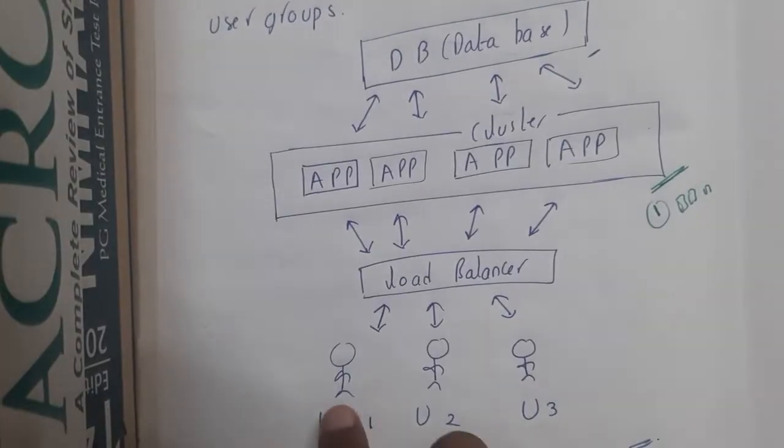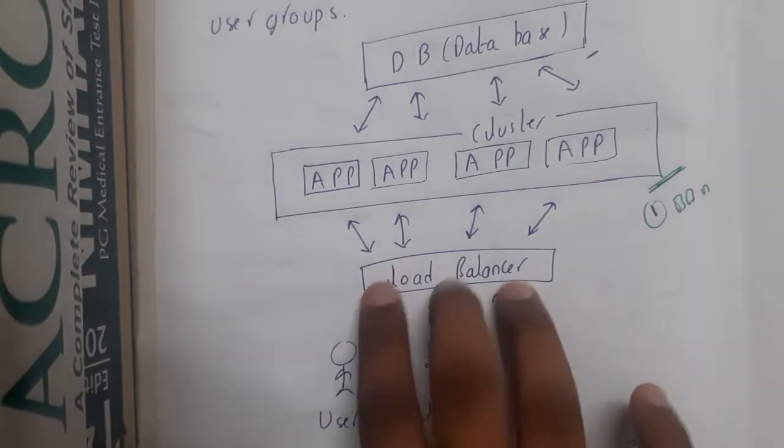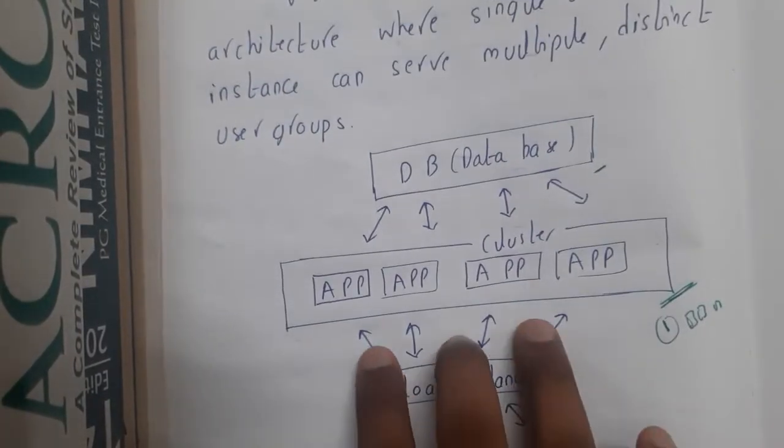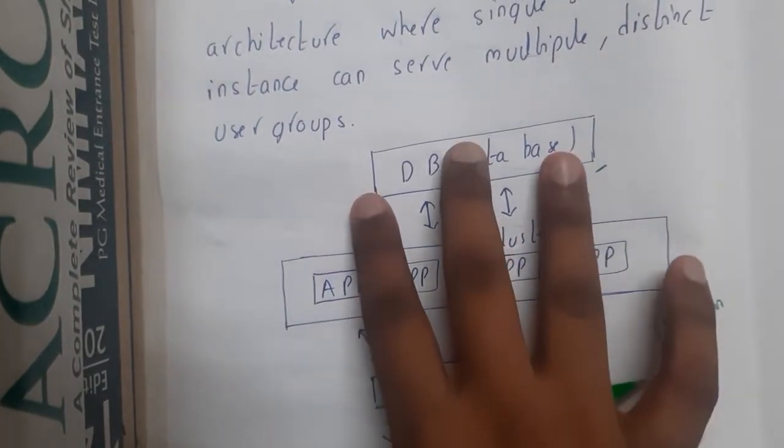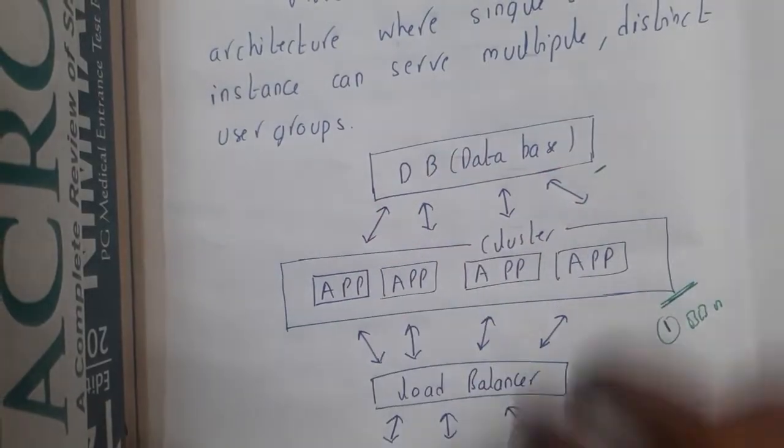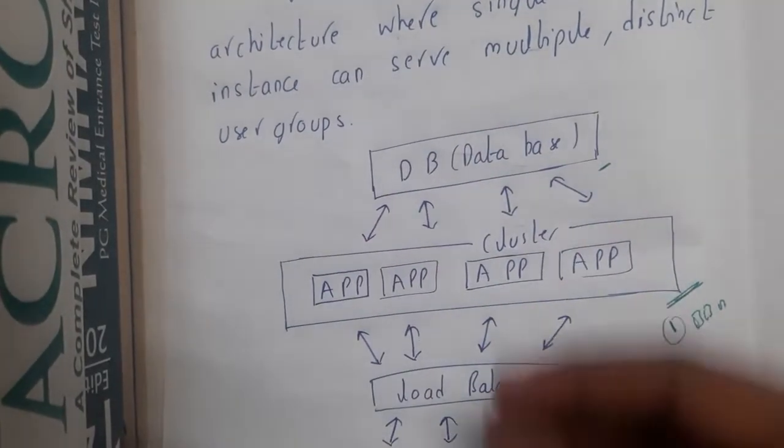Observe the flow carefully. The user will request, so the request will pass through the load balancer, from the load balancer it will be moving on to this layer where the cluster of applications are there. From applications it will be moving on to the database and the request will be done and they will be tracking back.